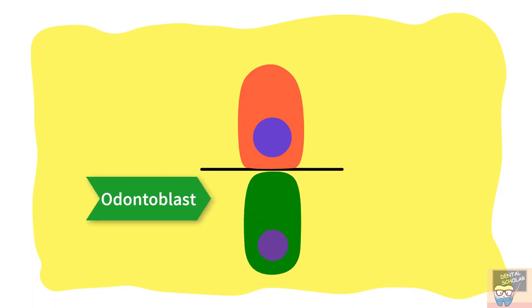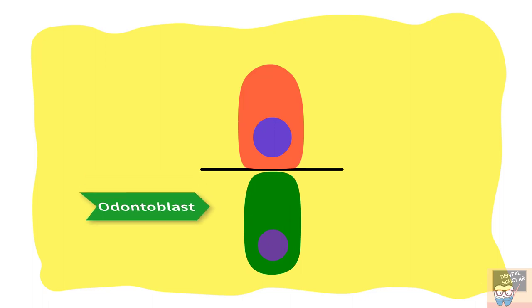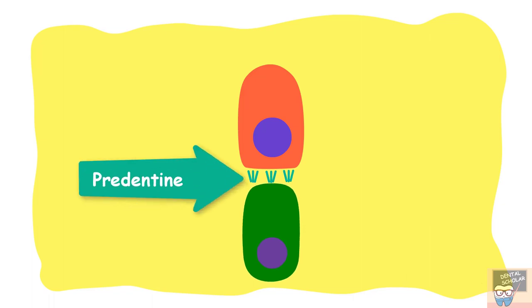In the next step, the basement membrane supporting the inner enamel epithelial cells disintegrates and is removed by the preameloblast, while at the same time the odontoblasts are secreting predentine — that is the organic matrix of the dentine. As soon as these preameloblasts come in contact with the predentine, they differentiate into ameloblast.